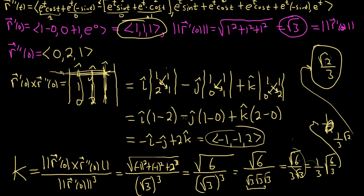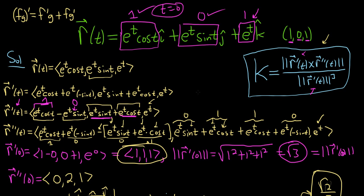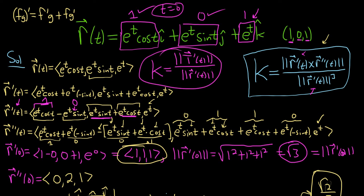I hope this video has been helpful. These problems are really long, and honestly this is the easiest formula. If you use the other formula for curvature it requires some nastier derivatives — it's harder. But whenever you have i, j, and k, it's easier to use this one. Take care and good luck.